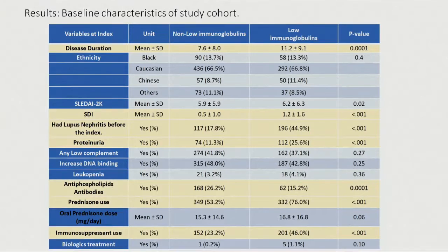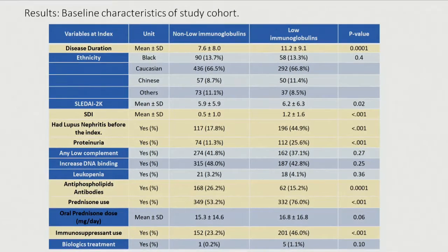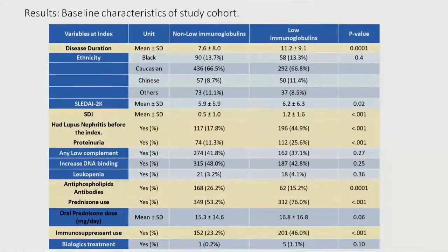What I was trying to highlight here is the baseline characteristic difference between both groups. You will see highlighted in yellow the differences: patients who have low immunoglobulin are more likely to have longer disease duration, more likely to have history of lupus nephritis, more likely to have proteinuria at the time of the low immunoglobulin, and they also have more prednisone use and immunosuppressant.